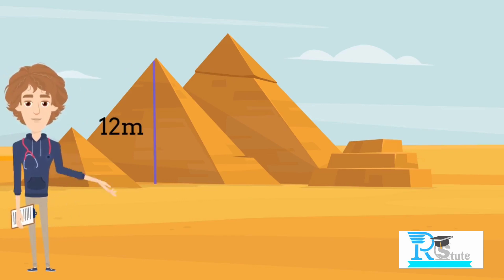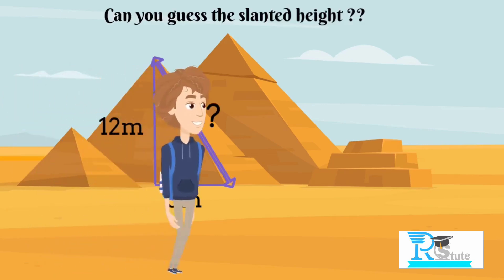Hi, if the perpendicular height is 12 meters and the base is 5 meters, can you guess the slanted height of this pyramid? The answer is 13 meters.